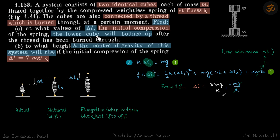In part one, we need to find what δl causes the lower cube to bounce up. When the thread is cut, the top block moves up — first passing through the spring's natural length l₀, then continuing upward until it eventually comes to rest. We want the minimum δl such that this block bounces up.